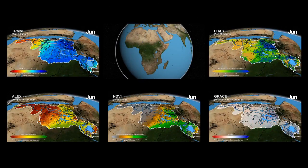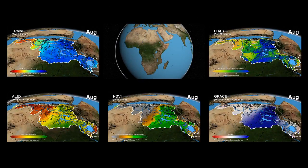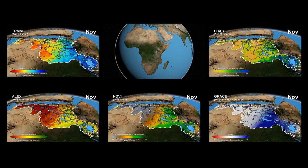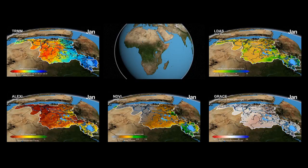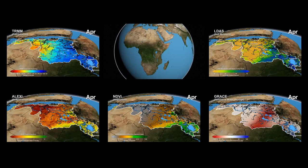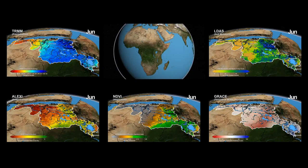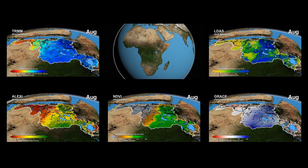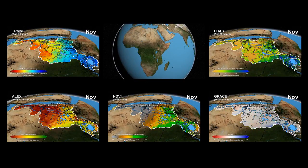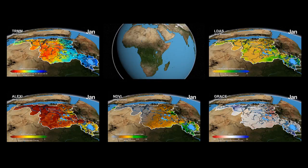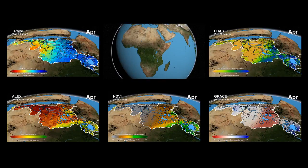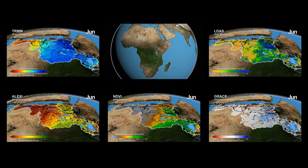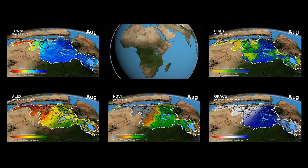By providing a complementary array of observations and models of Nile River flow, NASA research provides policymakers with objective, basin-wide information to inform collaborative water management.